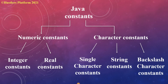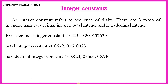First, integer constants. Integer constants refer to a sequence of digits. There are three types of integer constants in Java: decimal integer constant, octal integer constant, and hexadecimal integer constant. Decimal integer constants consist of a set of digits from 0 to 9, preceded by an optional minus sign. For example: 123, -320, 650, 0, 763, 139 — all are valid decimal integer constants.